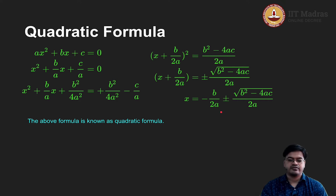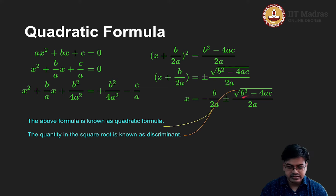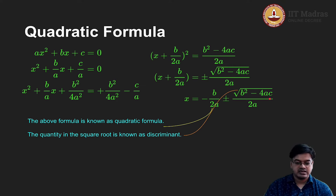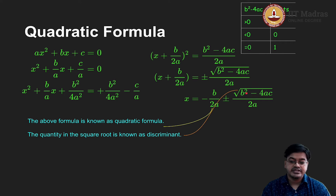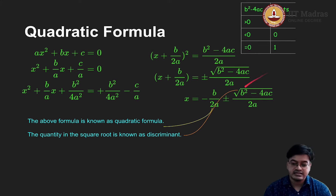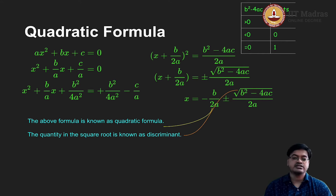This formula is known as the quadratic formula, and the term under the square root is known as the discriminant. The complete expression on the right hand side is the quadratic formula, and b squared minus 4ac is called the discriminant — because it discriminates. If b squared minus 4ac is greater than 0, we have two real roots. If b squared minus 4ac equals 0, we have only one repeated root. And if b squared minus 4ac is less than 0, we are taking the square root of a negative number, which goes into the complex domain — so there are no real roots.